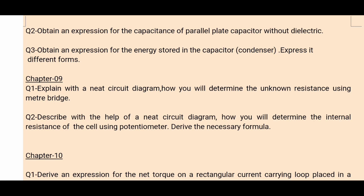The next question is related to the potentiometer, which is very important in current electricity. Describe with the help of a neat circuit diagram how you will determine the internal resistance of a cell using a potentiometer and derive the necessary formula. The formula derived is r = R × (L1/L2 − 1), which is the internal resistance of the cell formula. The answer is on page 223.